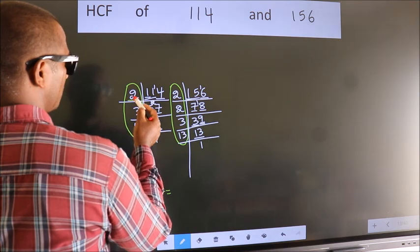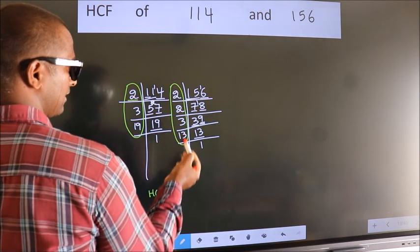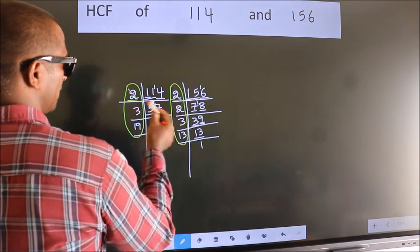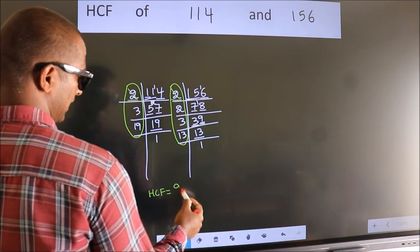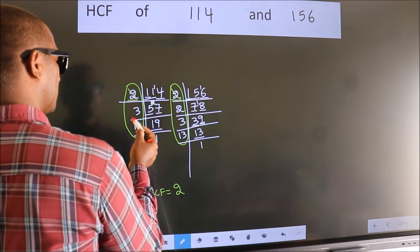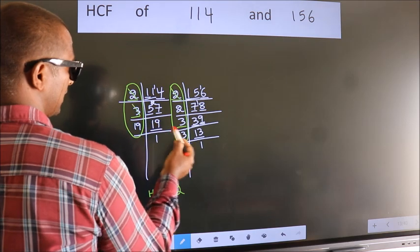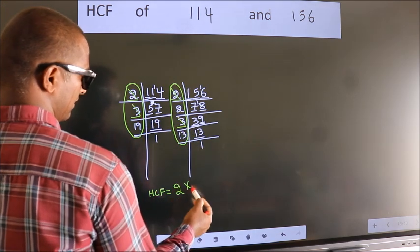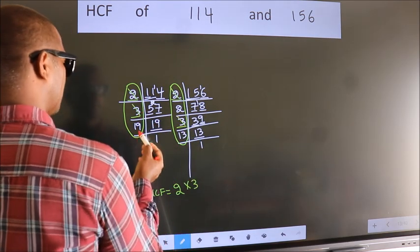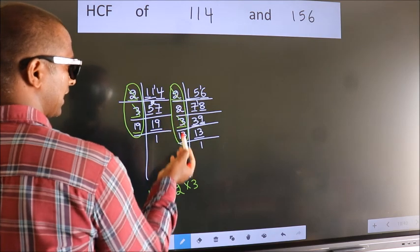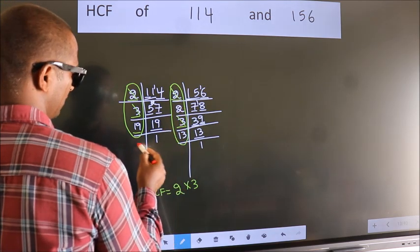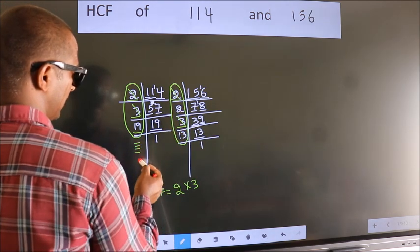Starting with the number 2. Do we have 2 here? Yes. So cut 2 right here. Next, number 19. Do we have 19 here? No. No more numbers have been left out.